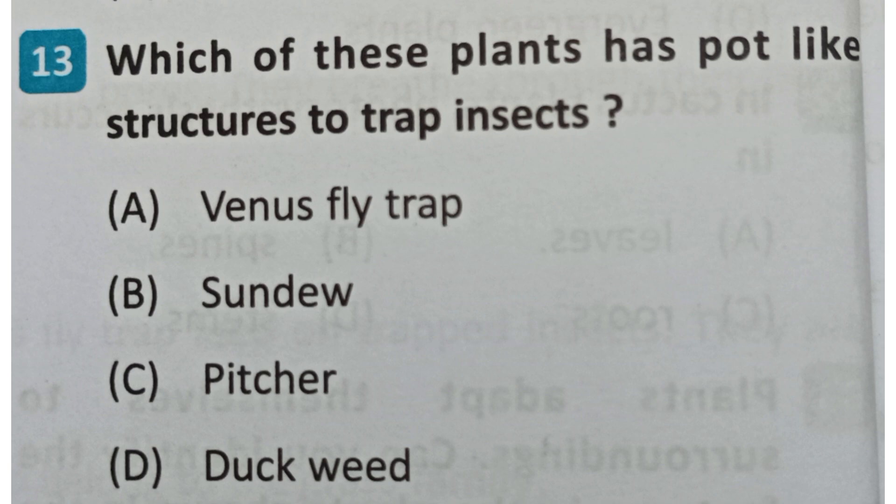Next question: Which of these plants has a pot-like structure to trap and digest insects? Options: Venus flytrap, Sundew, Pitcher plant, Duckweed. The correct answer is C - pitcher plant.